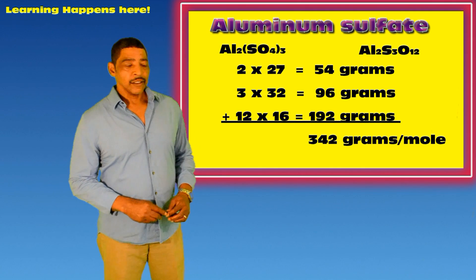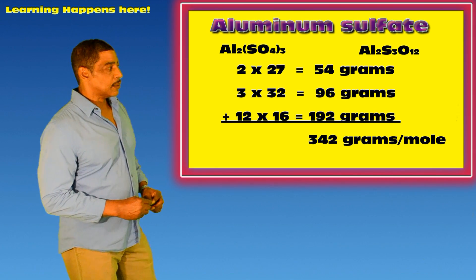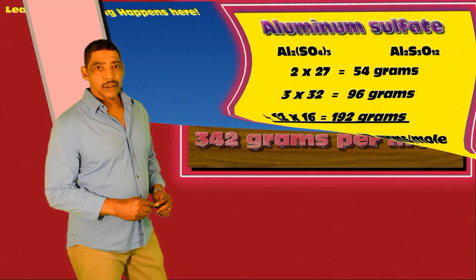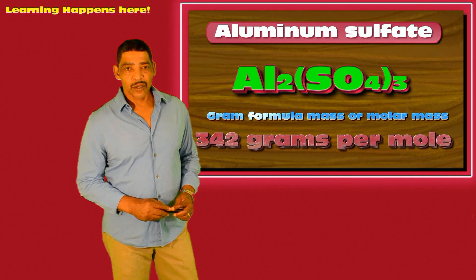Now we add. The sum of these masses will equal 342 grams per mole, which represents both the formula mass as well as the molar mass.